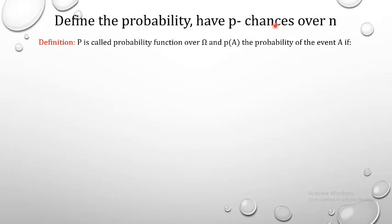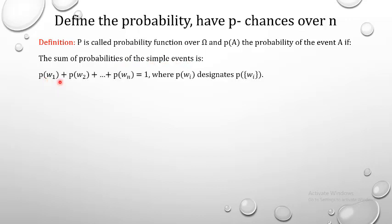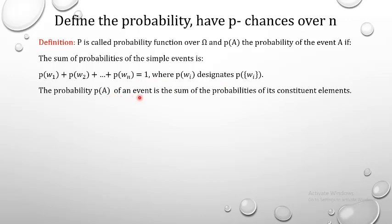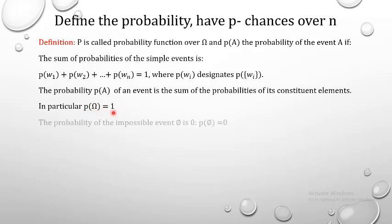Define the probability P as chances over n. P is called the probability function over omega, and P(A) is the probability of event A, where the sum of the probabilities of all simple events equals 1. In particular, P(omega) = 1 — the probability of the universe is 1. The probability of the impossible event phi is 0, since phi has no elements.